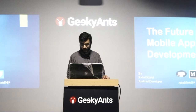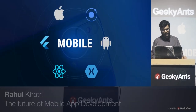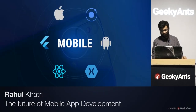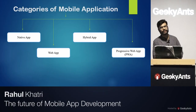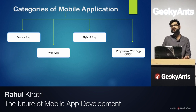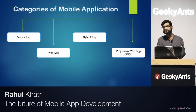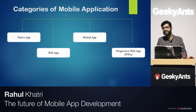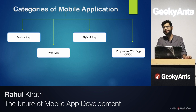Talking about mobile app development, there are four major categories or types of apps: native apps, hybrid apps, web apps, and progressive web apps (PWAs).